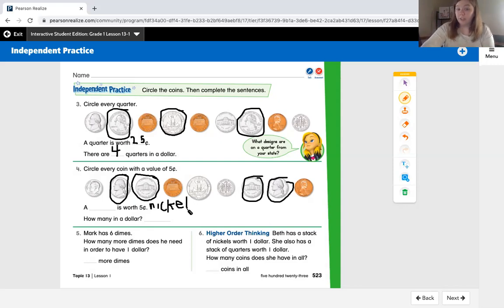How many nickels are in a dollar? To figure this out, we would count by fives all the way to 100. If I count 5, 10, 15, 20, 25, 30, 35, 40, 45, 50, that's 10, 55, 60, 65, 70, 75, 80, 85, 90, 95, 100, that's 20. There are 20 nickels in one dollar.